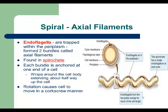Spirochetes need to create a unique form of movement. Each endoflagellum is composed of two bundles; each bundle is attached to the pole of the cell and wraps around the cell body, extending about halfway up. With the help of endoflagella or axial filaments, spirals move in a corkscrew manner.